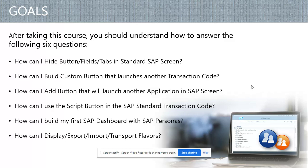How can I use the script button in an SAP standard transaction code? This is something new which can be used, but I want to be clear — you cannot replace ABAP with SAP script. This is just a feature which should not be used to remove ABAP code.